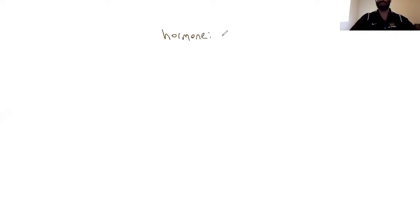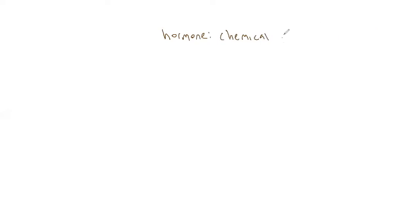Without further ado, we're going to talk about hormones. Chapter seven is going to be mostly about the endocrine system, but first let's define what a hormone is. A hormone is a chemical messenger — very similar to what we talked about in chapter six — meaning that it is going to bind with some kind of receptor and it is transported through the blood. Hormones generally act on a large number of cells and create system-wide responses.